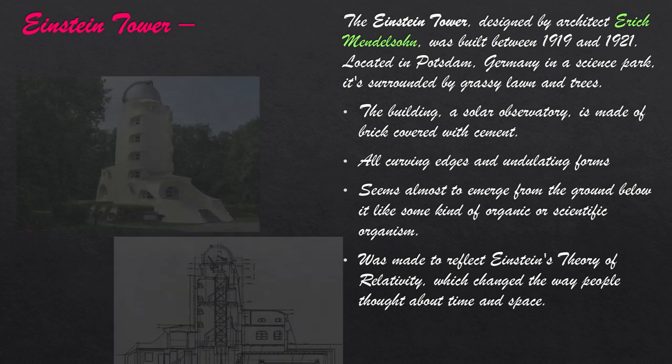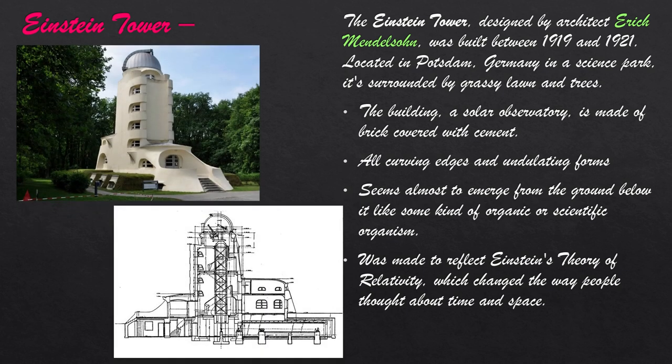The Einstein Tower, designed by architect Erich Mendelsohn, was built between 1919 and 1921. Located in Potsdam, Germany, in a science park, it is surrounded by grassy lawn and trees. The building, a solar observatory, is made up of brick covered with cement. Its curving edges and undulating forms seem almost to emerge from the ground below it like some kind of organic or scientific organism. It was made to reflect Einstein's theory of relativity, which changed the way people thought about time and space.